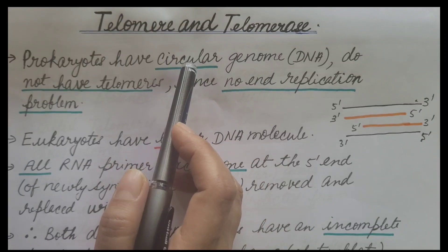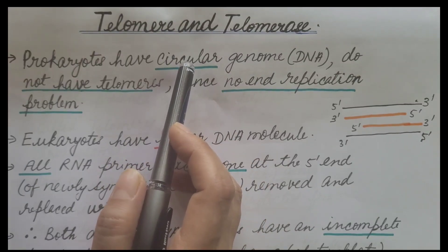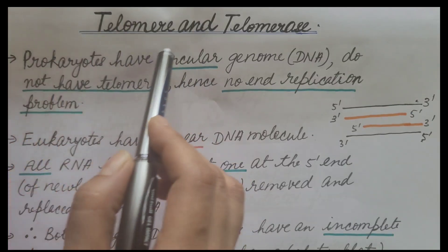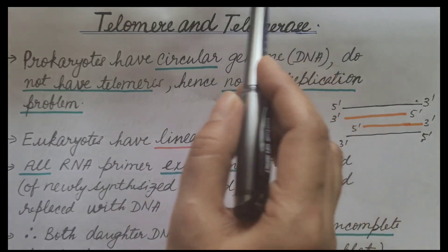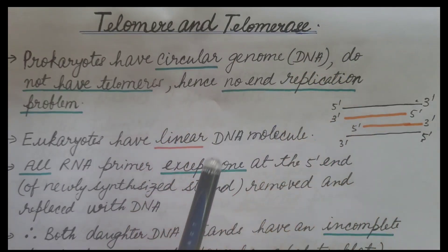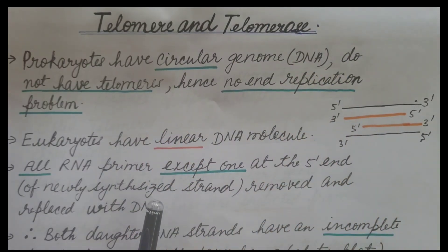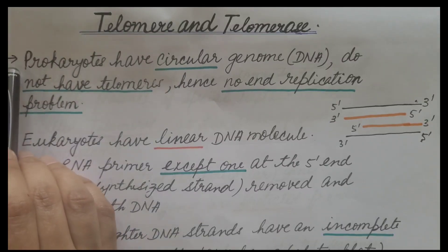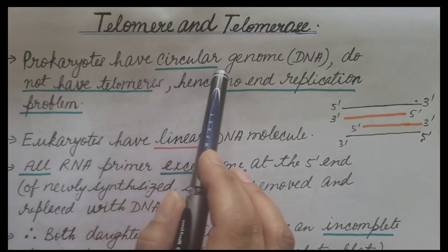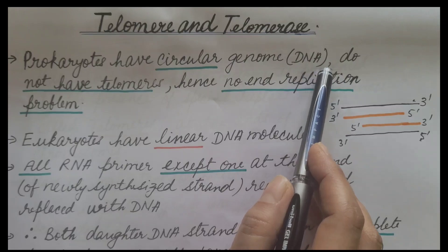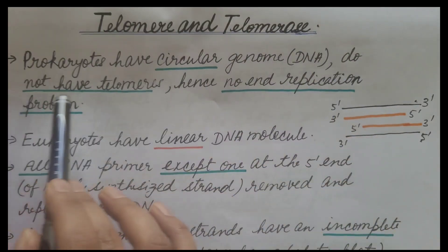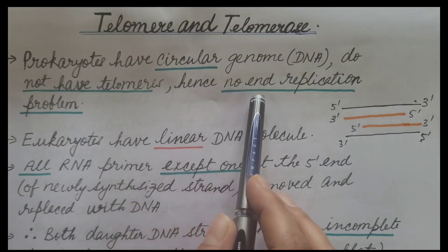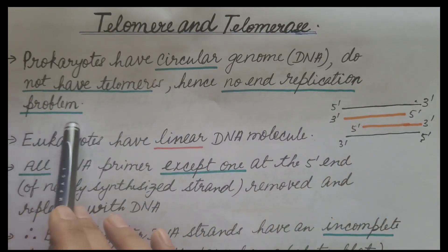Since eukaryotic DNA is linear, there is a problem in the replication of the ends. How this is overcome by the presence of telomere and telomerase enzyme is what we will discuss. Prokaryotes have circular DNA and do not have telomeres, hence there is no end replication problem.